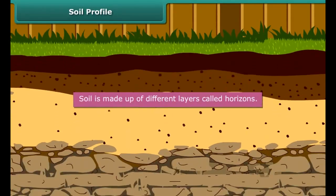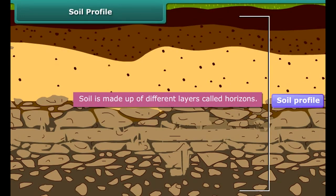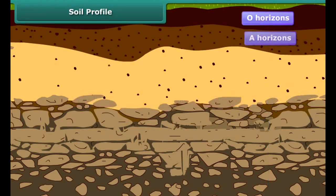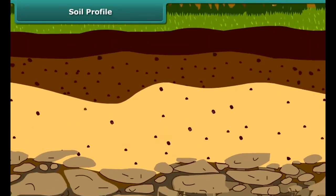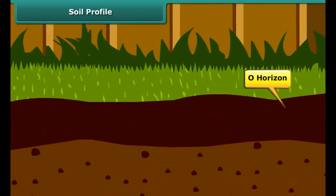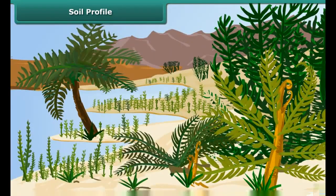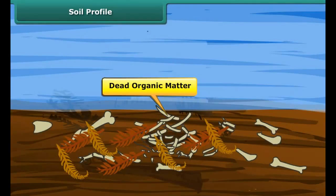Soil is made up of different layers called horizons. Each horizon has its own characteristics. A soil basically has five horizons namely O, A, B, C and bedrock. The first layer is called the O horizon. This layer contains dead organic matter that lies on the surface. This mostly consists of fallen leaves and decaying animals.